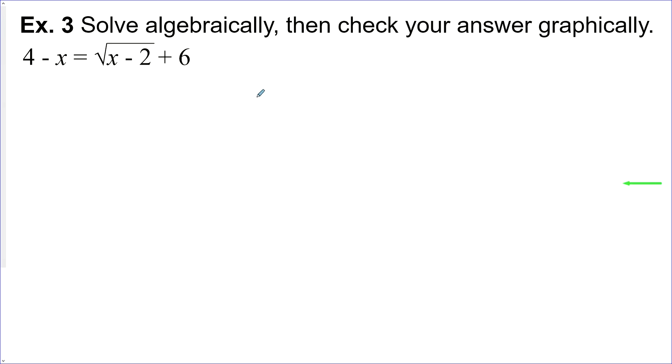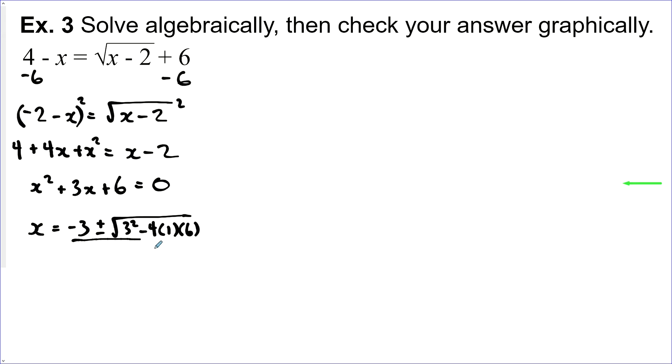Solve algebraically, then check your answer graphically. It's quite easy to isolate the radical here. Just subtract 6 on both sides. We get negative 2 minus x is equal to the square root of x minus 2. Now we'll square both sides. And on this side, the square root cancels, but on this side, it's a binomial, so we need to expand this. So 4 plus 4x plus x squared is equal to x minus 2. Now we'll shove everything over to one side. So we'll say that x squared plus 3x plus 2 on this side, so plus 6 is equal to 0. Now it doesn't look like I can factor this. I don't know what multiplies to 6x squared and adds up to 3x. So let's use the quadratic equation. x is equal to negative b plus or minus the square root b squared minus 4ac all over 2a.